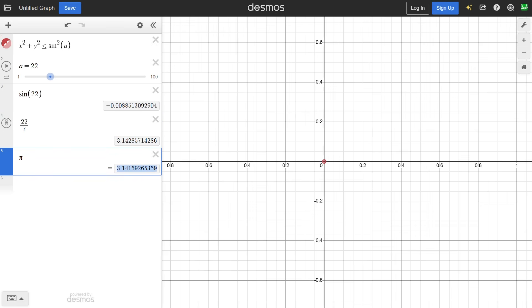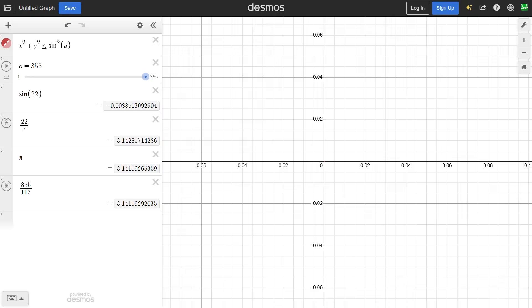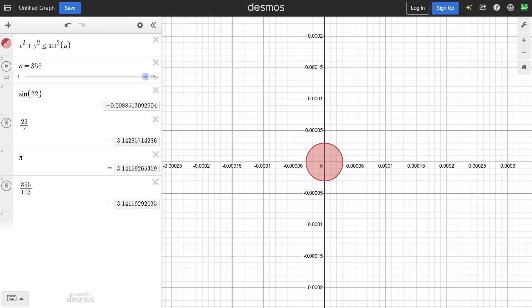And this isn't a coincidence. Watch this. 355 over 113 is an even better approximation for pi, and 355's circle is so small you need to zoom in to see it. Wow, you have to zoom in really far. Yeah, by the way, 355 over 113 is a really good approximation for pi.